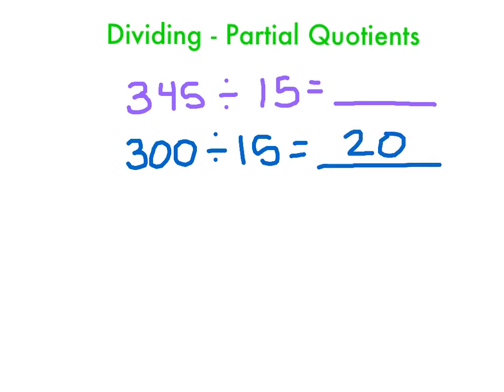Now some of you may not be able to see that. The way I do that is I cover up my zero. So I cover up my zero and I figure 15 goes into 30 two times and then it goes into the zero zero times. So that's where I get my 20.